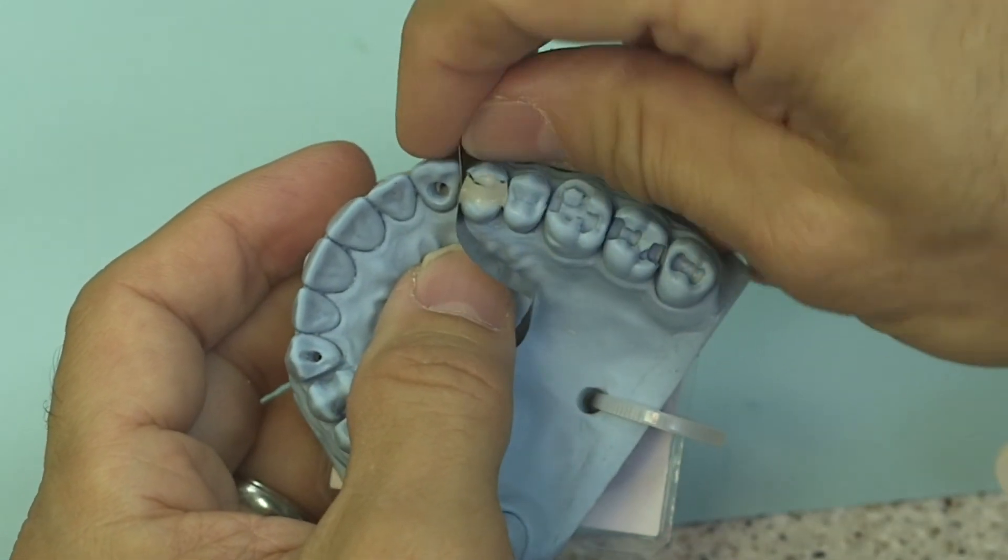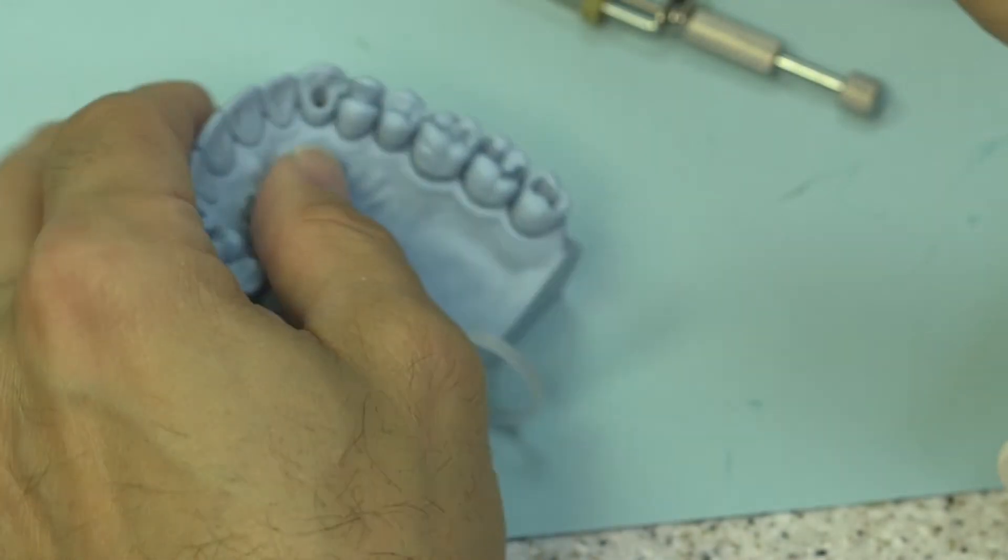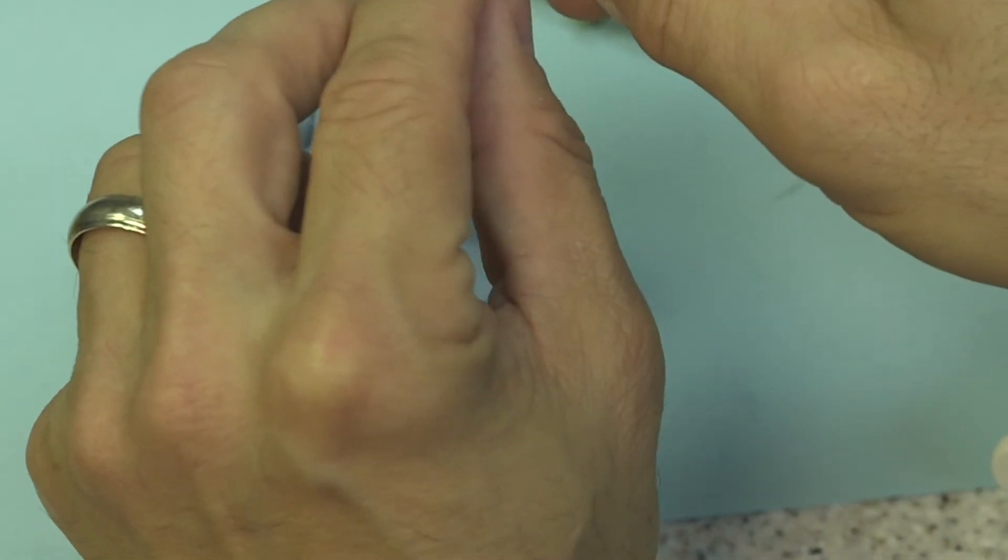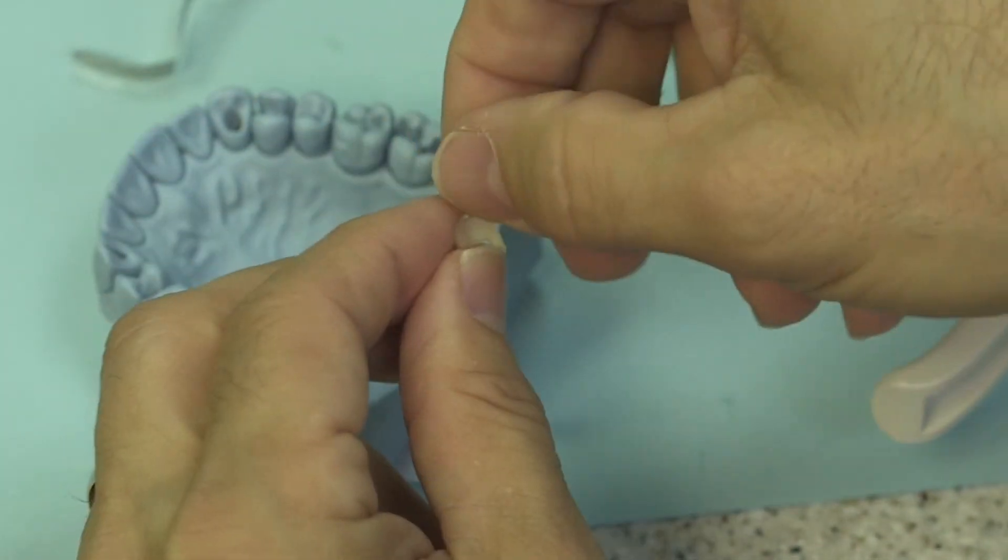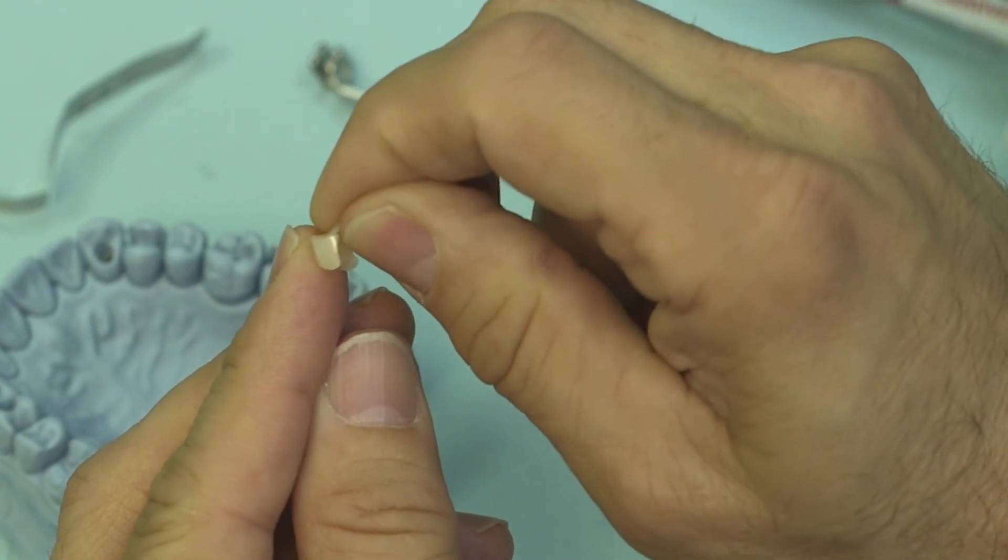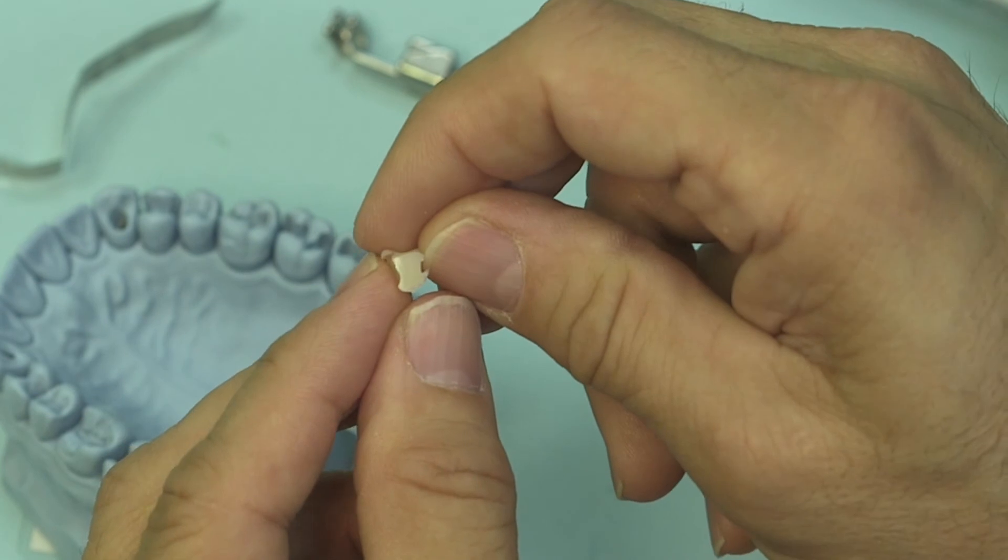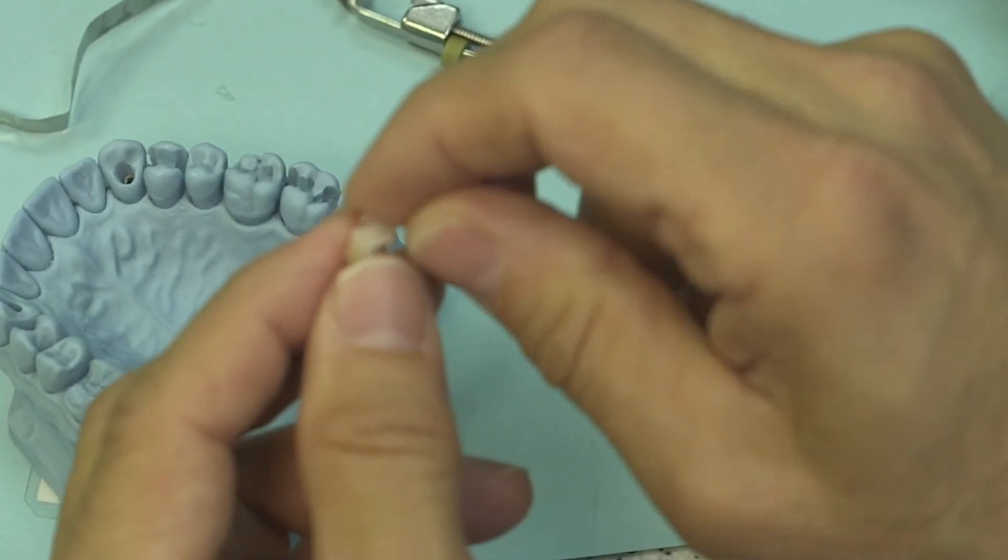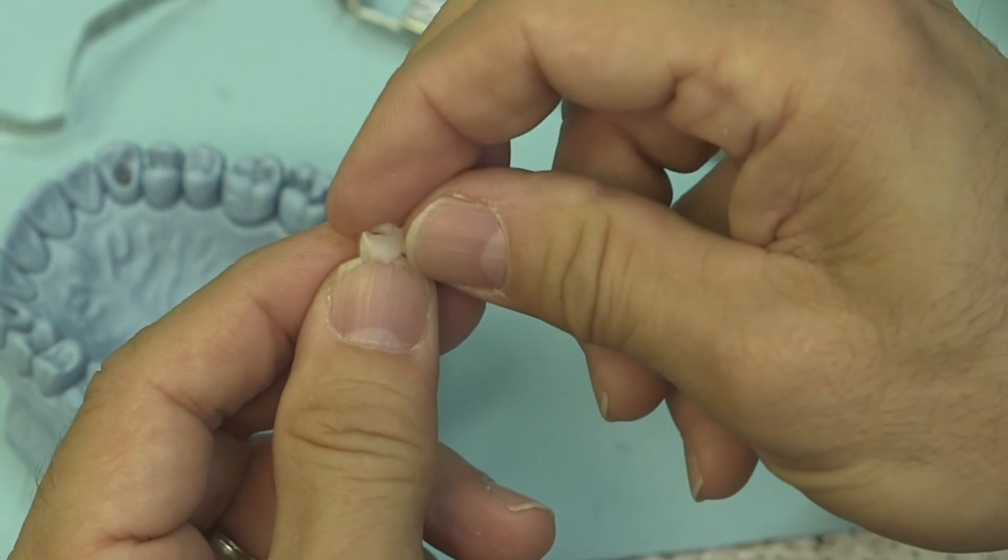I'm going to remove the matrix band from it, and in this situation because of the rubberization of the model the material came right on out. We have a very nice interproximal contact area, nice and smooth, and then you'd be able to trim up the occlusal surface.